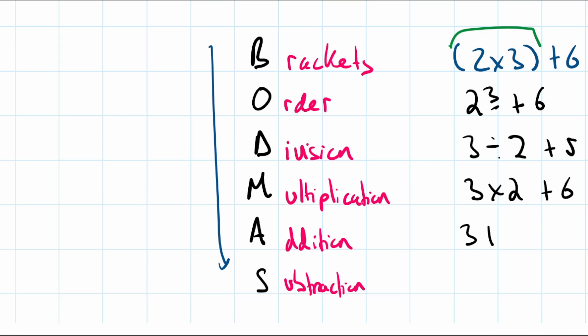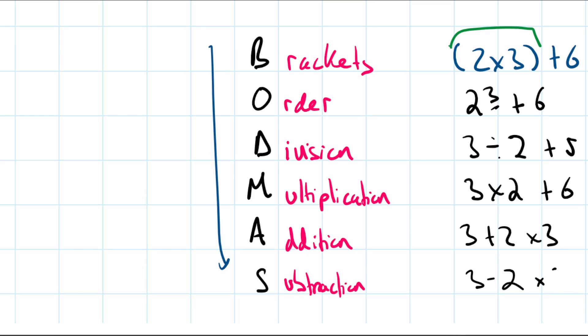The last two are Addition and Subtraction, which take place last. So if you had 3 plus 2 multiplied by 3, you do the multiplication first and then the addition. Same idea for subtraction — do any higher-priority operations first, then the subtraction last.